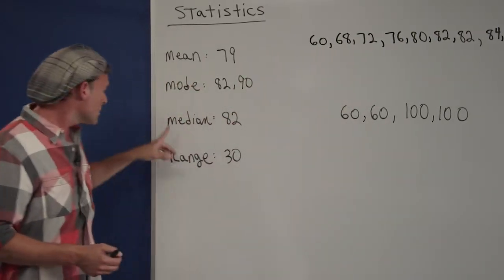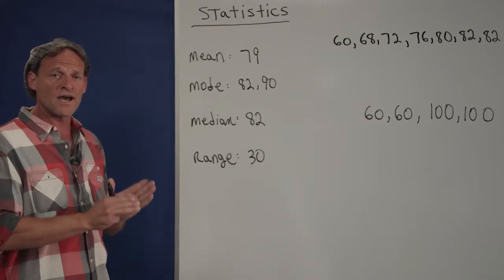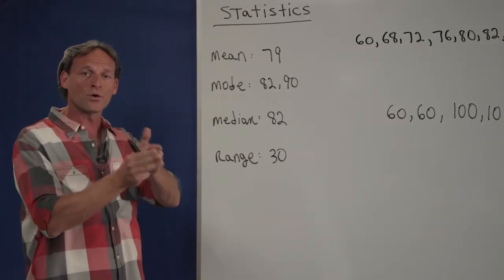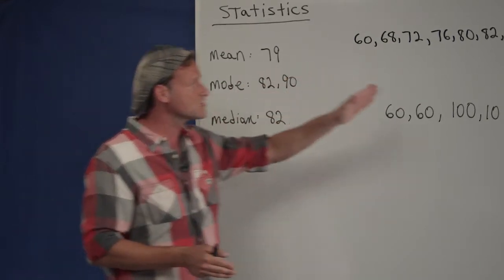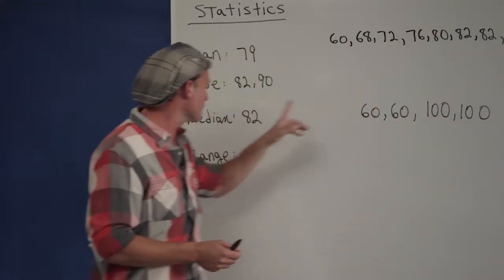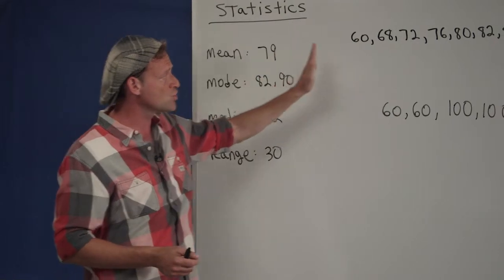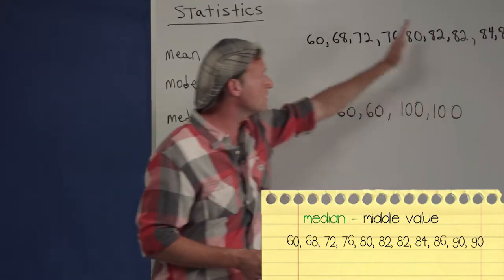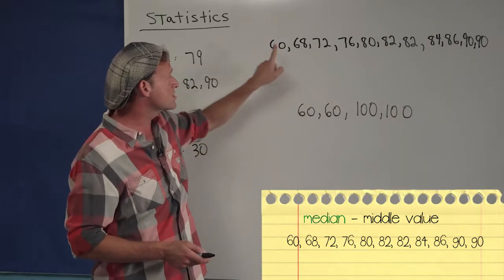Median is simply the number that divides the upper half of the class between the upper and lower halves of the class. It basically splits this down the middle. So to find the median, you have to make sure your numbers are arranged from least to greatest and then look at the middle number.